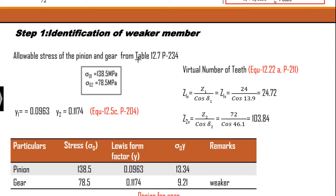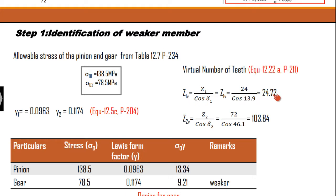Next is the calculation of the virtual number of teeth using equation 12.22, page number 211. Using the equation Zv1 = Z1 divided by cos delta 1, where delta 1 is 13.9 degrees, upon substituting we get Zv1 as 24.72 and Zv2 as 103.84. These are the virtual number of teeth of this spur gear.